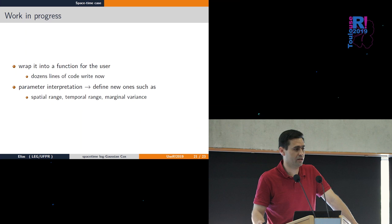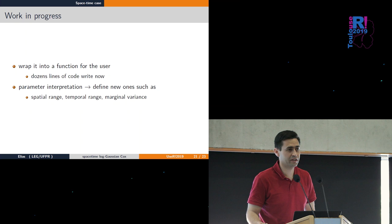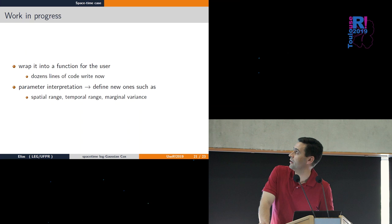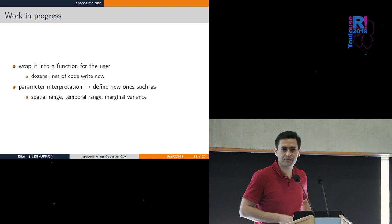What's going on now is the code is there, but we need to wrap it into a function to make it easy for users. Another point is the parameters on the heat equation aren't used to interpret, so we're doing work with my colleague on interpretable parameterization.